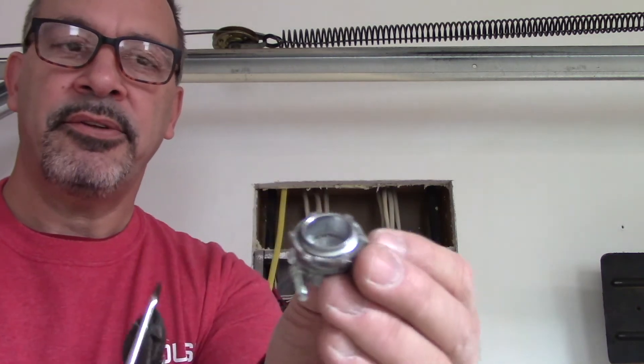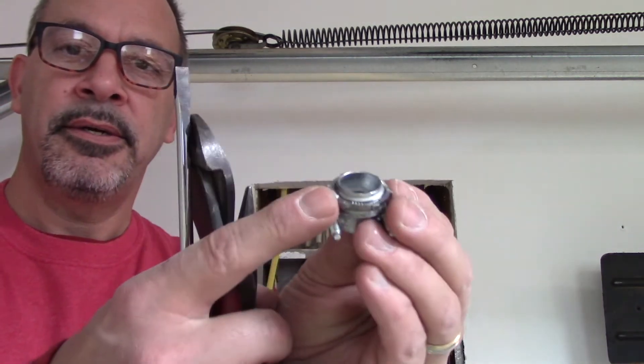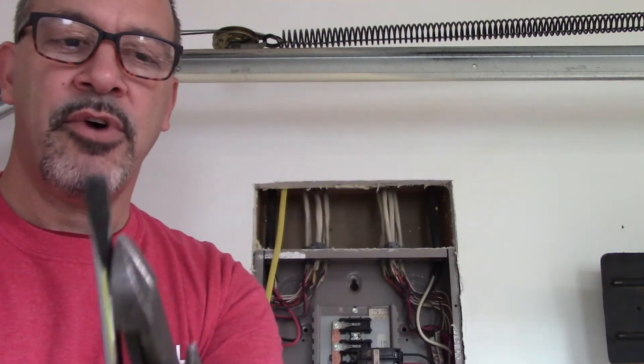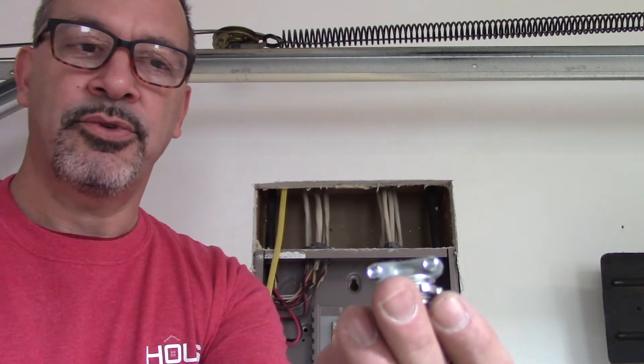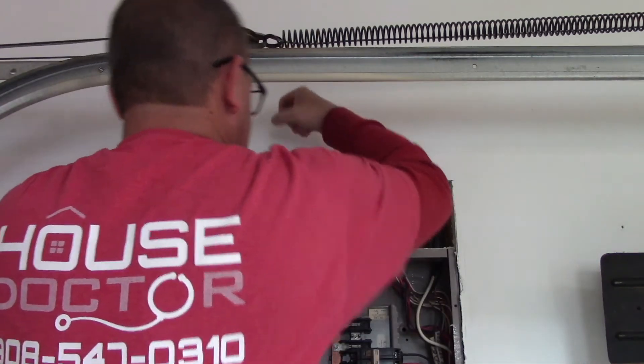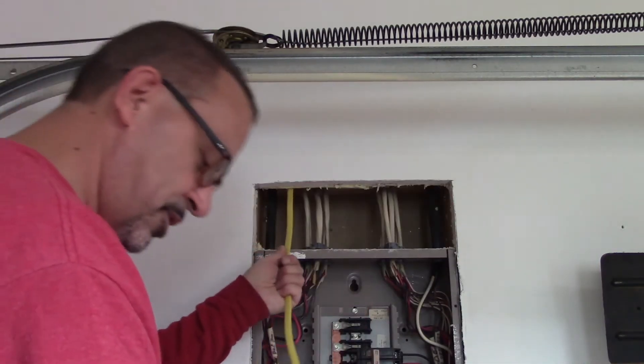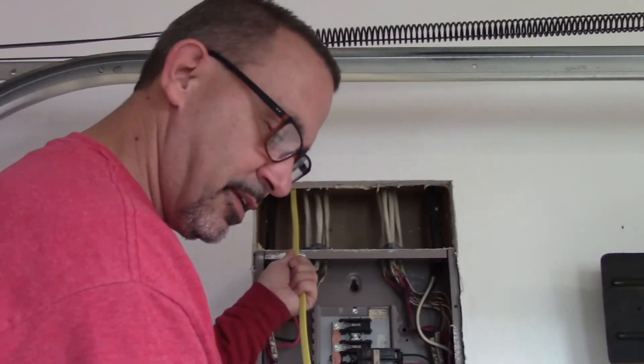After you knock out the hole, you slide this in, put the nut on, tighten it up, feed the wire through this end on the outside, and tighten up these two screws. That's nice and secure. Now I'll strip back the sheathing on this wire and feed it into the panel.